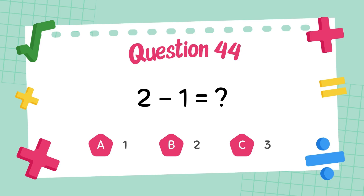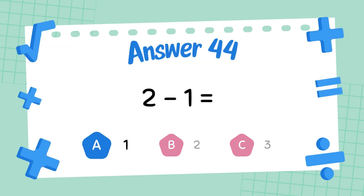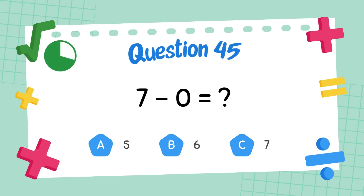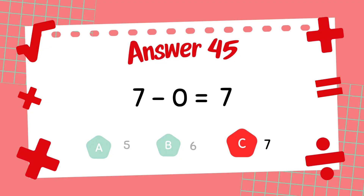What is 2 minus 1? The answer is 1. What is 7 minus 0? The answer is 7.